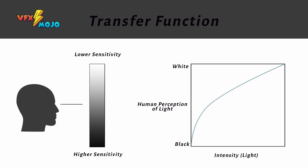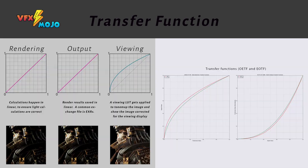Our eyes are more sensitive in darker areas, and an image encoded with linear values will look very unnatural to us. To compensate, we apply a transfer function to encode luminance in a non-linear fashion. We can apply this to image formats as well — to save disk space, it is preferable to encode a transfer function into the image to favor the tonal values our eyes actually see.